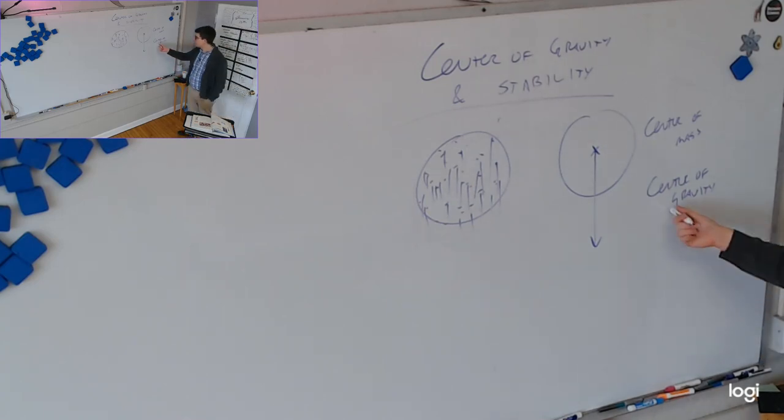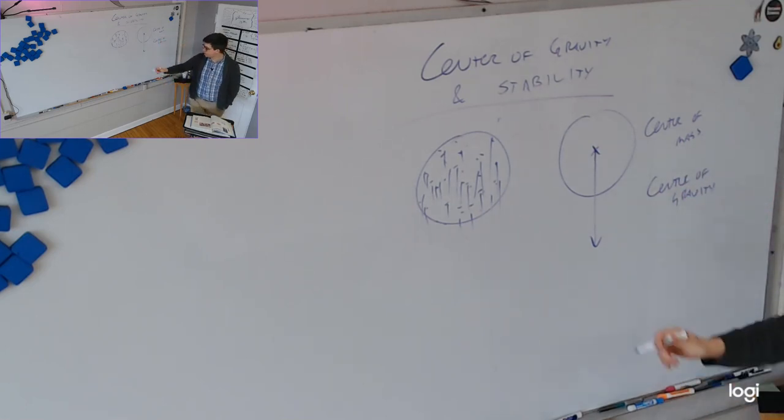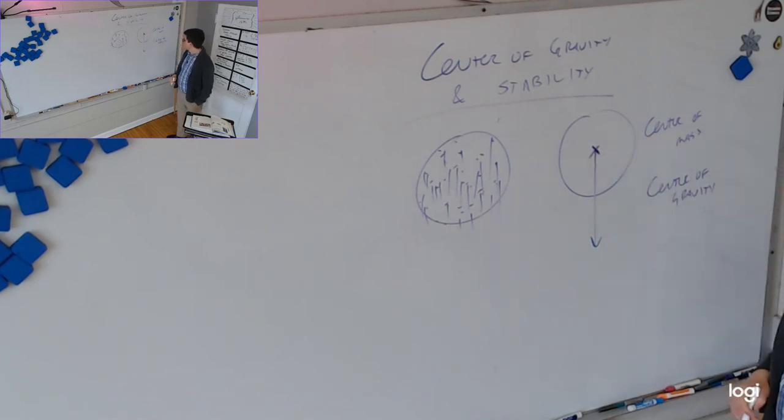The difference here is that center of mass is where all of the inertial mass of the products can be considered to be concentrated here in the center. And the center of gravity is where we can consider the force of gravity to be acting all concentrated, which is also here in the center.